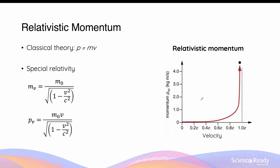The effects of this equation on the momentum of the object can be better understood by visualizing it on the graph. As the velocity of the object increases and tends towards a relativistic velocity, its momentum increases at a much higher rate. And as its velocity approaches the speed of light, the momentum of the object approaches infinity.